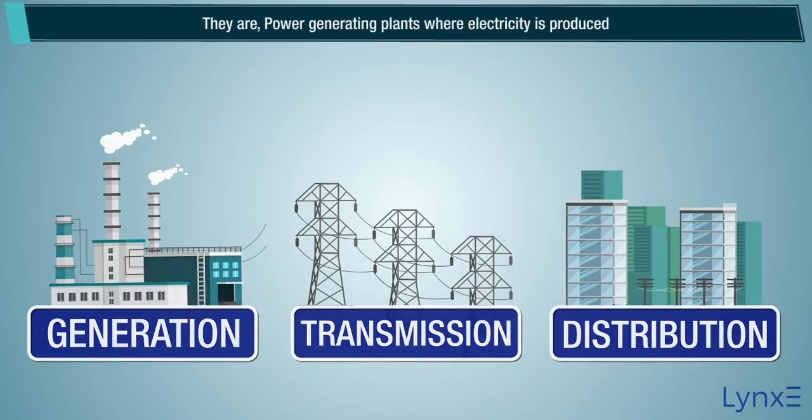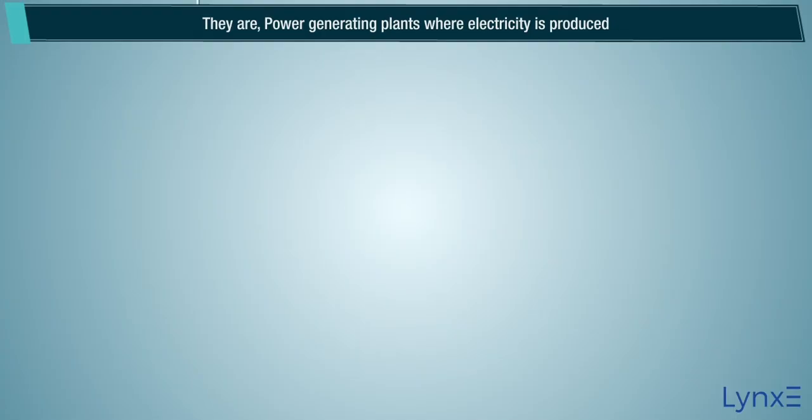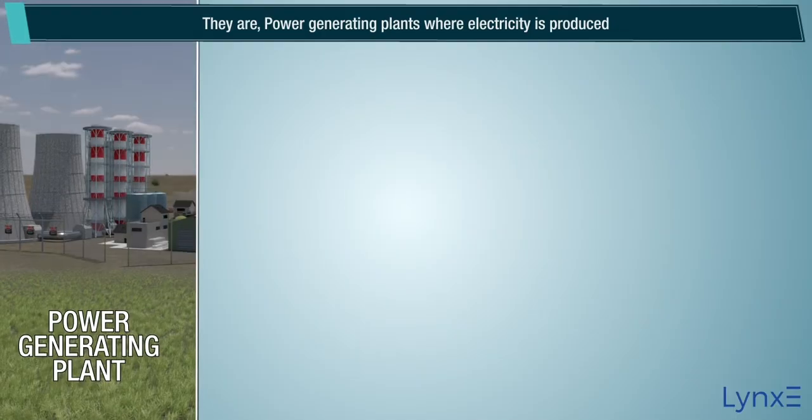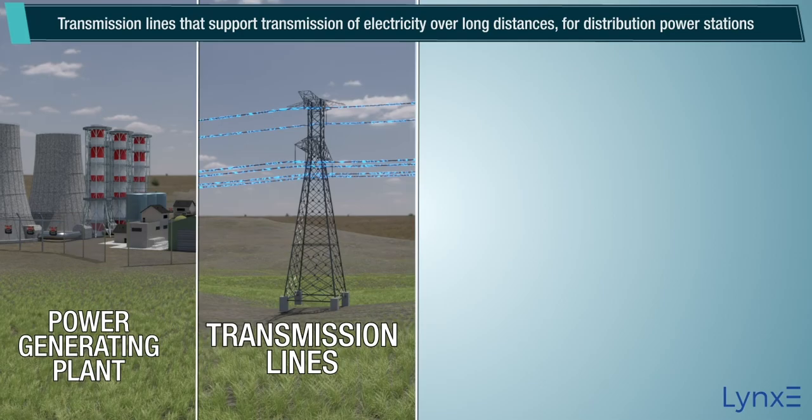They are power generating plants where electricity is produced, and transmission lines that support transmission of electricity over long distances for distribution power stations.